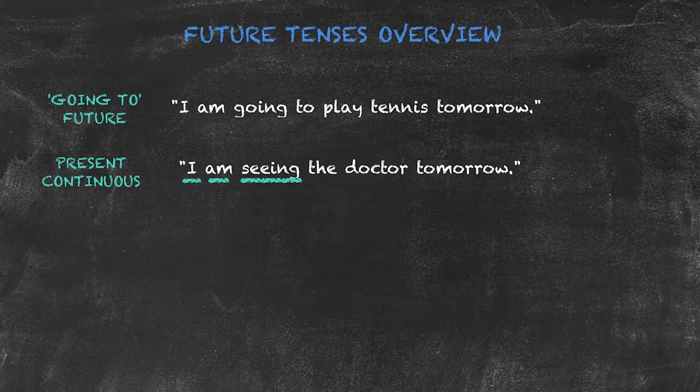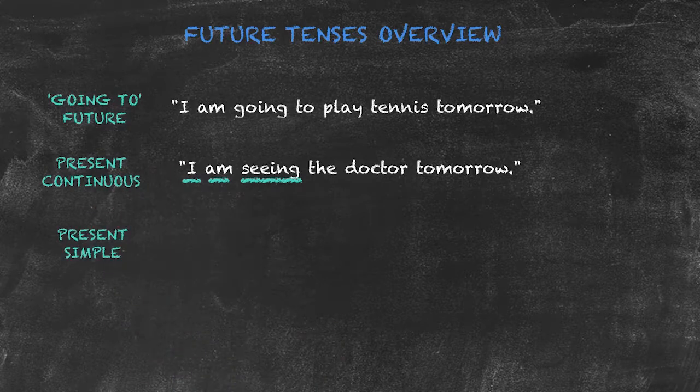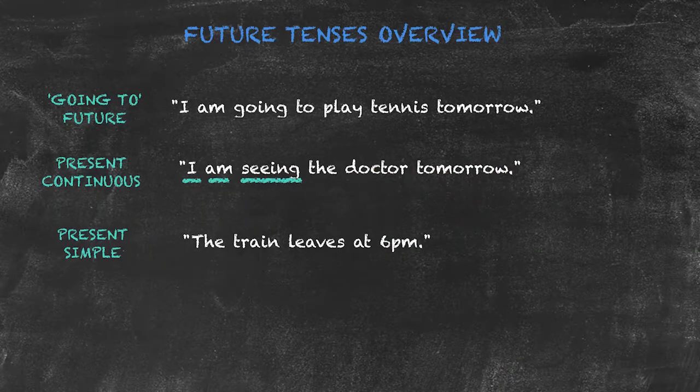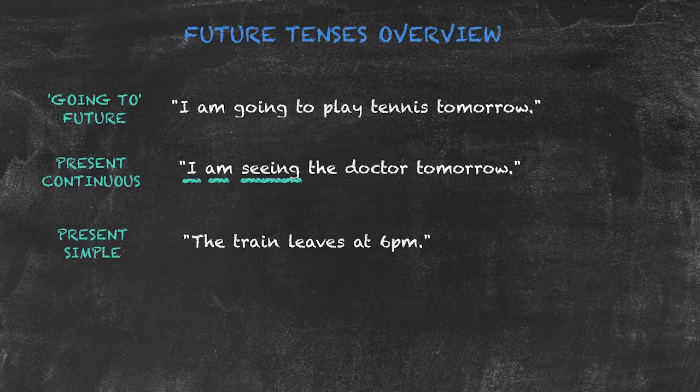The final tense that we use for the future is the present simple, such as in our example sentence: the train leaves at 6 p.m. The present simple here is being used with the future meaning, and it's used for scheduled or timetabled events.